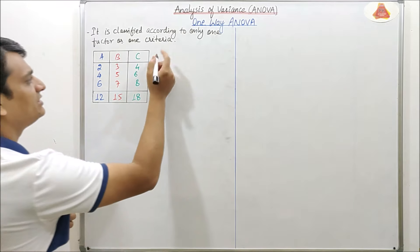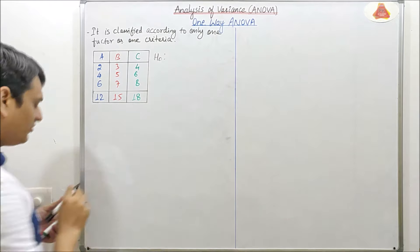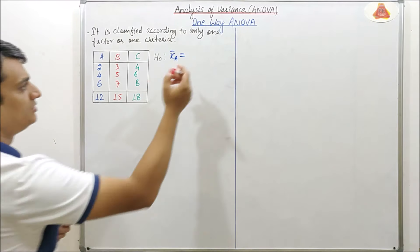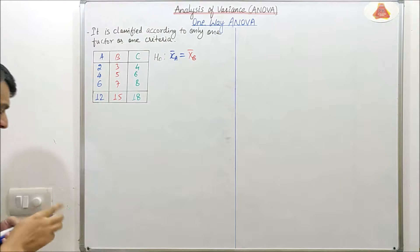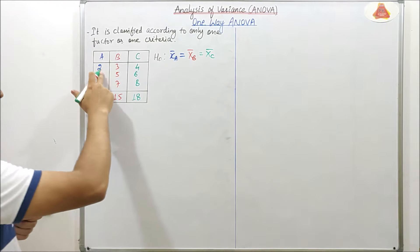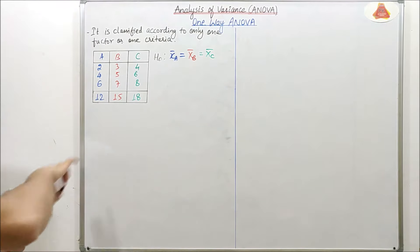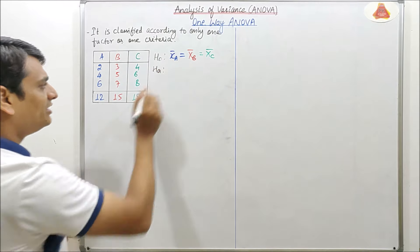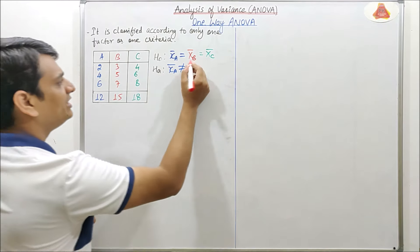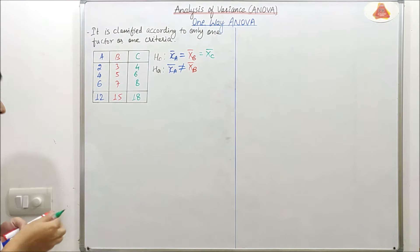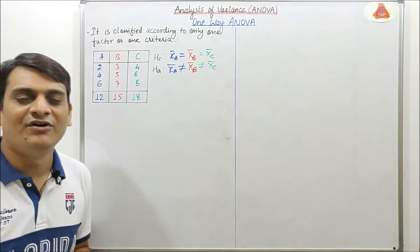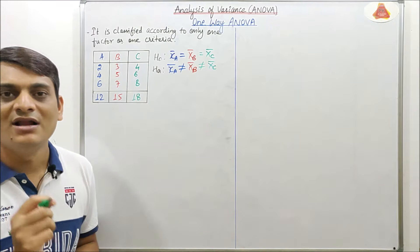The null hypothesis for this data is: X̄A = X̄B = X̄C, meaning the means of samples A, B, and C are equal. The alternative hypothesis is: X̄A ≠ X̄B ≠ X̄C. So the first step in one-way ANOVA is to state the null hypothesis and the alternative hypothesis.